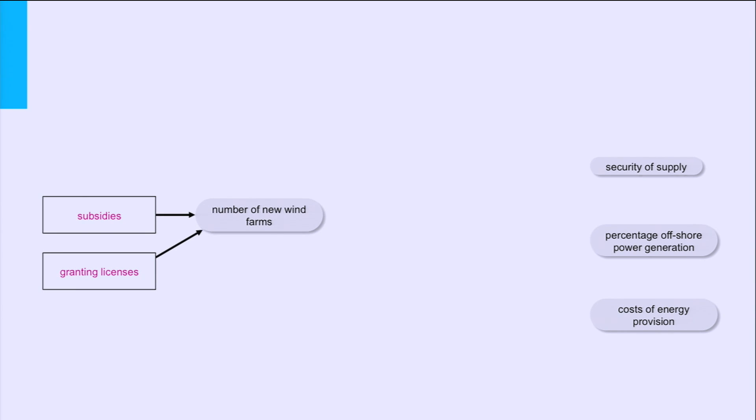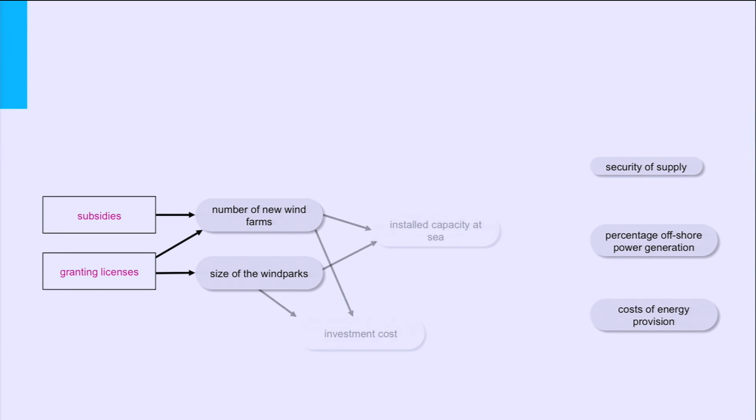We start from the Ministry of Economic Affairs. Their objectives are more offshore power generation without impeding security of the Dutch energy supply and affordability. At the right, we put percentage offshore power generation, affordability — which we translate into cost of energy provision — and security of supply. At the left, we put their means: subsidies and granting licenses. Both means positively influence the number of new wind farms, and the licenses also influence the size of the wind parks. Number and size influence the installed capacity at sea and the investment cost. The installed capacity influences the percentage of offshore generation, and investment cost influences the cost of energy provision.